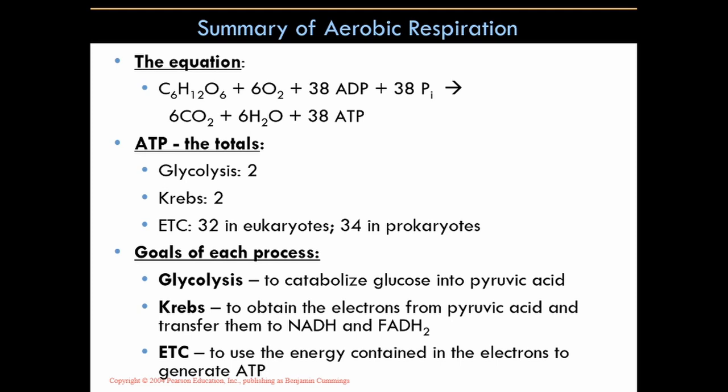Looking at the totals for each process: glycolysis produces four ATPs, but only two can be used because two are consumed in the prep stage, giving a net gain of two ATPs. In the Krebs cycle, for every molecule of glucose you get two ATPs — every turn of the cycle gives one, but that's only for half a glucose, since two pyruvates equal one glucose molecule.